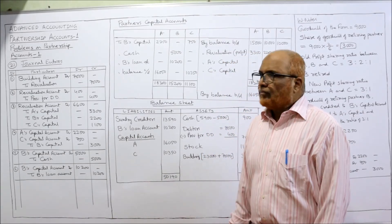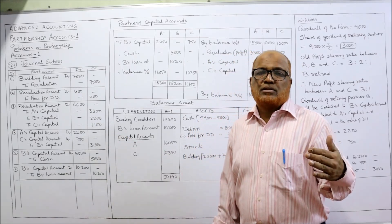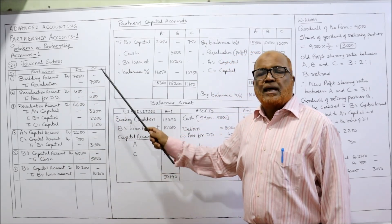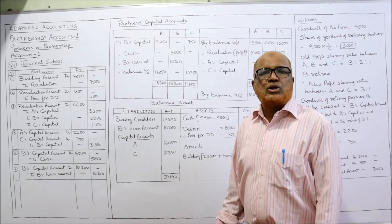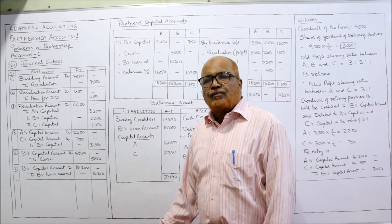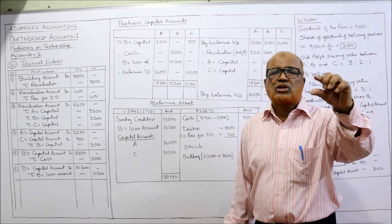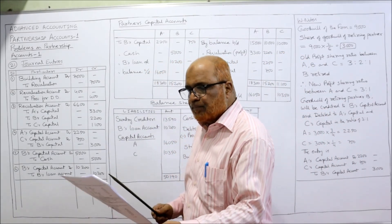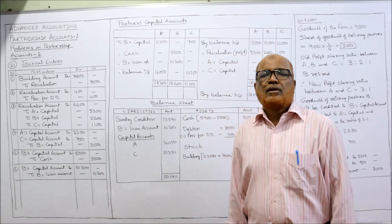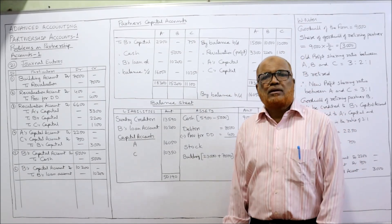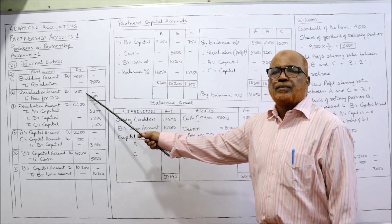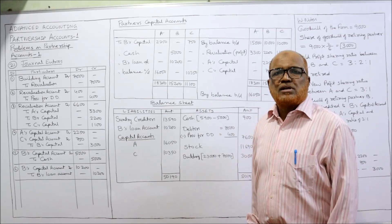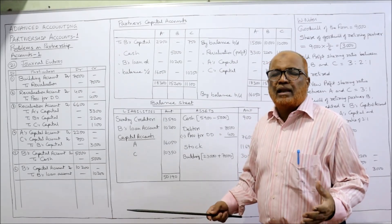First, building is appreciated, so the entry will be: building account debit, revaluation account credit, 7,000. Narration: being the value of building appreciated. Similarly, provision for doubtful debts — entry will be revaluation account debit, provision for doubtful debts credit, 400. How is 400 calculated? 5% of debtors: debtors are 8,000, so 8,000 into 5% = 400, being the provision for doubtful debts created.